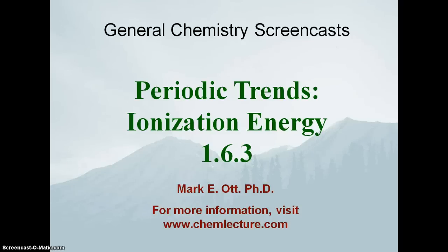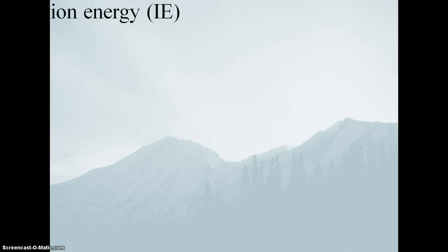In our previous screencast, we talked about our first periodic trend, that of atomic radius. Now we're going to talk about our second periodic trend, that of ionization energy. The explanations as to why atomic radius scales the way that it does through the periodic table is actually a very similar explanation as to why we have a periodic trend in ionization energy.